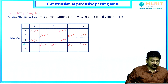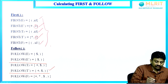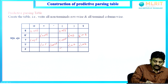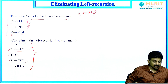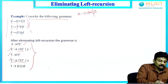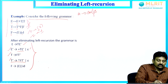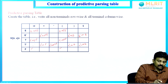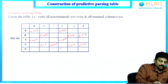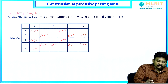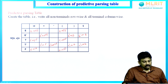Finally, for F: First(F) is left parenthesis and id. Wherever left parenthesis appears, we use the rule F → (E); wherever id appears, we use F → id. That is how we fill the entire parsing table.